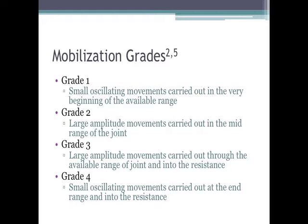You can grade this treatment based on how much movement you are providing at the joint. Grade 1 is a small oscillating movement carried out at the very beginning of the available range. Grade 2 involves large amplitude movements carried out in the mid-range of the joint. Grade 3 involves large amplitude movements carried out through the available range and into resistance. Grade 4 involves small oscillating movements carried out at end range into resistance.